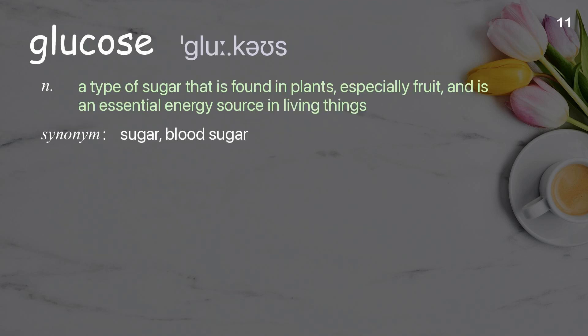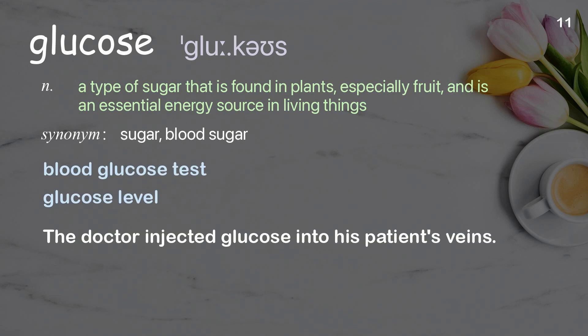Glucose. A type of sugar that is found in plants, especially fruit, and is an essential energy source in living things. Examples: blood glucose test, glucose level. The doctor injected glucose into his patient's veins.